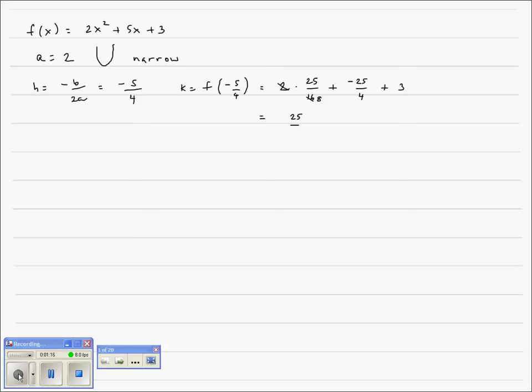That'll be 25 eighths. I'm going to go ahead and get a least common denominator here. Plus the negative 25 over 4 will become minus 50 eighths. And then our 3 will become 24 eighths. Add, subtract, simplify this, and we get our k value to be negative 1 eighth.